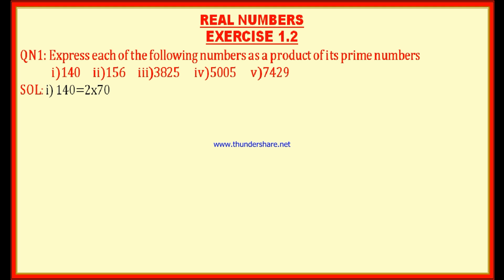Let us solve the first bit — we have to express 140 as the product of prime numbers. Since 140 has zero in the units place, it is divisible by 2. So 140 = 2 × 70, and 70 = 2 × 35. Now 35 is not divisible by 2 or 3, but it is divisible by 5: 35 = 5 × 7. Therefore, 140 = 2² × 5 × 7.